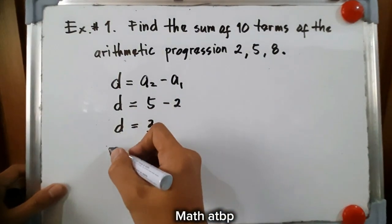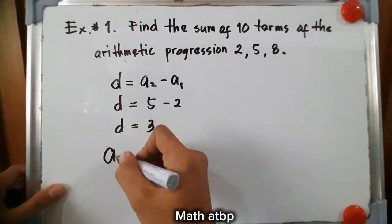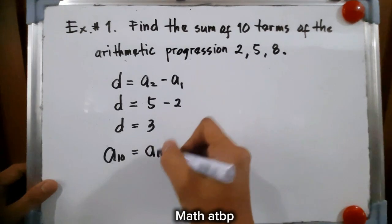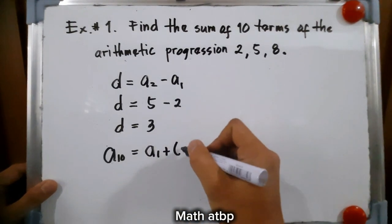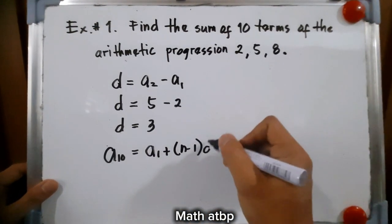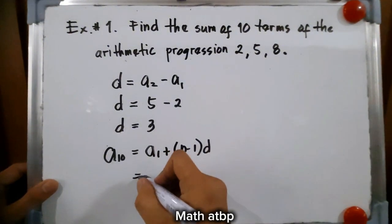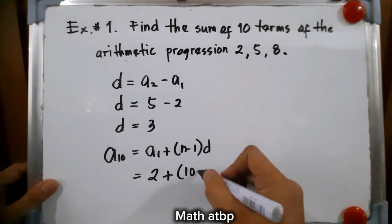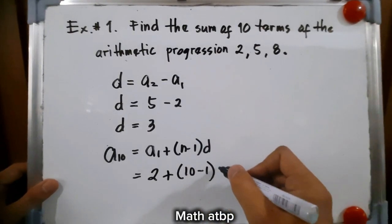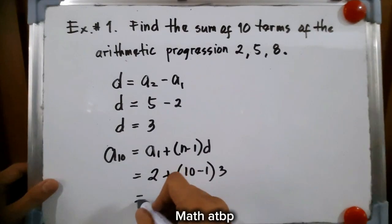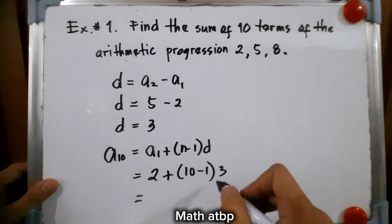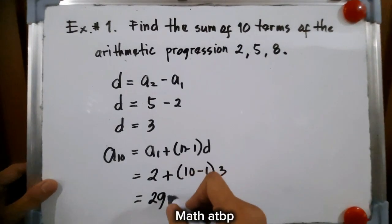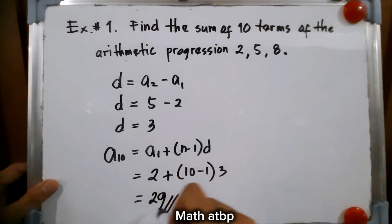The difference is equal to 3. Substituting that to our formula, a sub 10, the 10th term, is equal to a sub 1 plus the quantity n minus 1 times d. That is equal to 2 plus 10 minus 1 times 3, which is 2 plus 3 times 9 is 27, and that is 29. So our 10th term is 29.